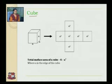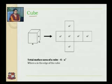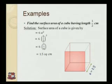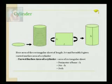Next is cube. As we know, a cube has six faces and these faces are identical, with each face having side length a. So the area of one face is a squared, and therefore the total surface area of a cube is 6 times a squared, that is 6a squared. Example: Find the surface area of a cube having length 1/2 cm. Surface area equals 6 into (1/2) squared, which equals 6 into 1/4, equals 1.5 cm squared.